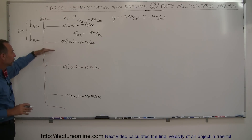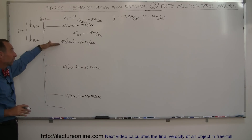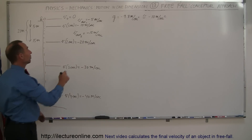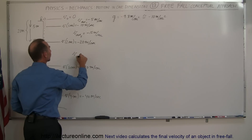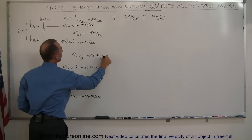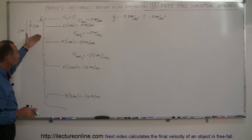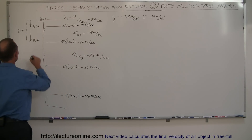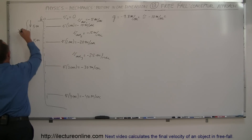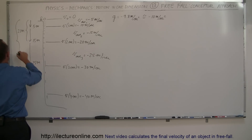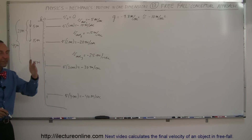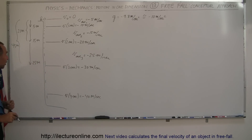How far did the object drop during the third second? It started at minus 20 and ended at minus 30. That means the average velocity over the third second is minus 25 meters per second, which means during that third second it dropped 25 meters. So the total distance after three seconds would be 45 meters — the ball would be 45 meters lower than where it started.